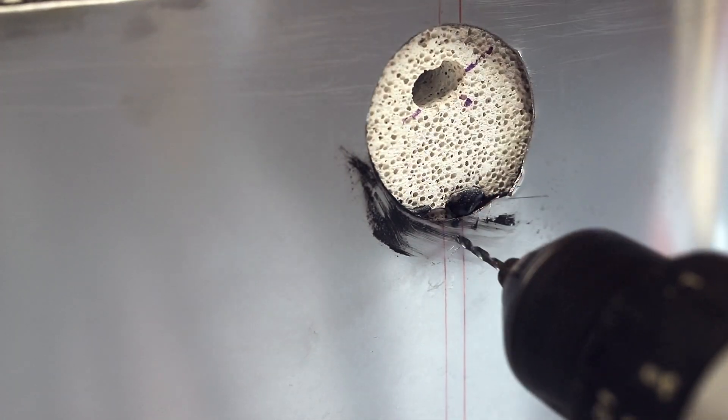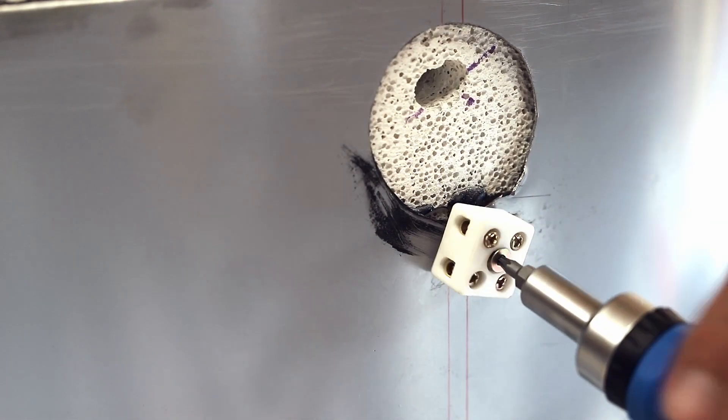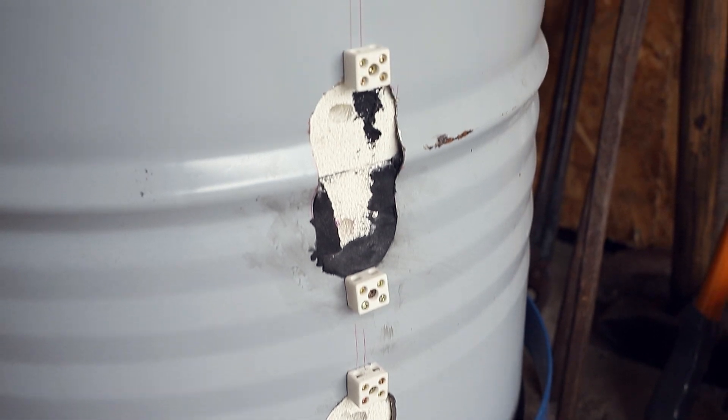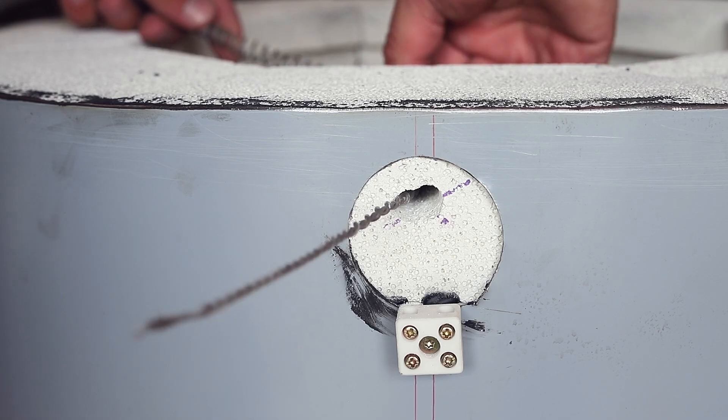Before mounting the heating elements, I drilled four small holes for mounting these ceramic terminal blocks, which will be used to connect the heating elements to the wires going to the control box. Now the heating element can be inserted into the fire brick grooves.